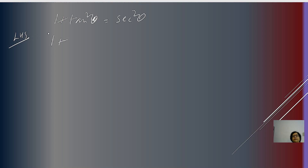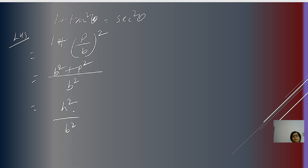The second identity is 1 + tan²θ = sec²θ. Taking the left-hand side: tan θ = P/B, so 1 + (P/B)² gives us (B² + P²)/B², which equals H²/B². Since H/B = sec θ, this becomes sec²θ, the right-hand side. You can also proceed from the right-hand side, break sec²θ as (B² + P²)/B², separate the terms, and get the left-hand side.